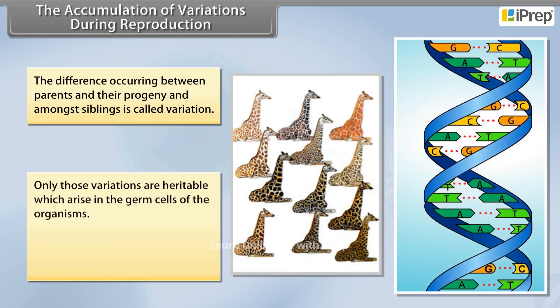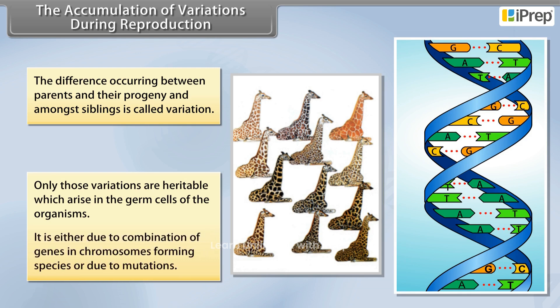Only those variations are heritable which arise in the germ cells of the organisms. It is either due to combination of genes in chromosomes forming species, or due to mutations.